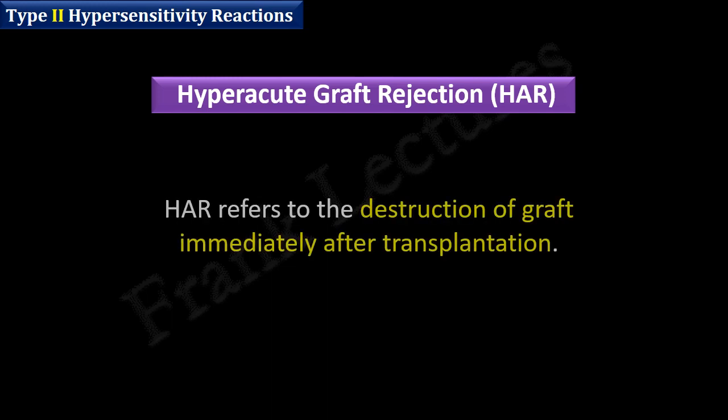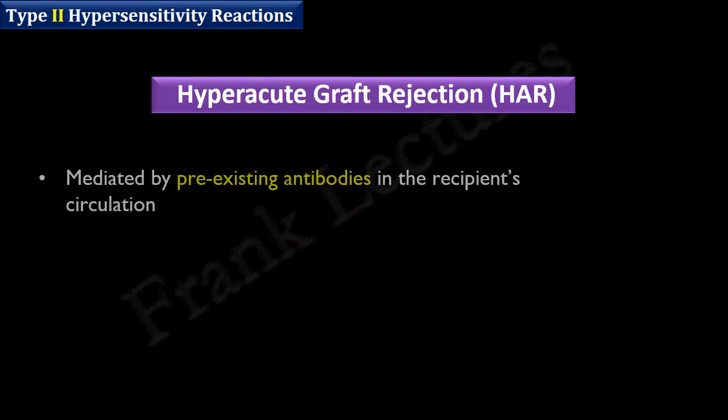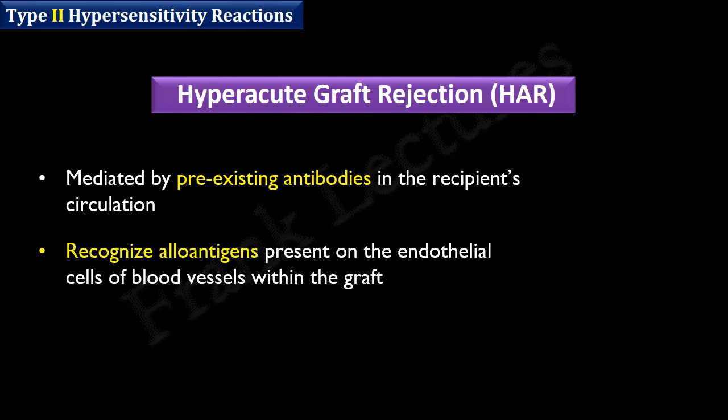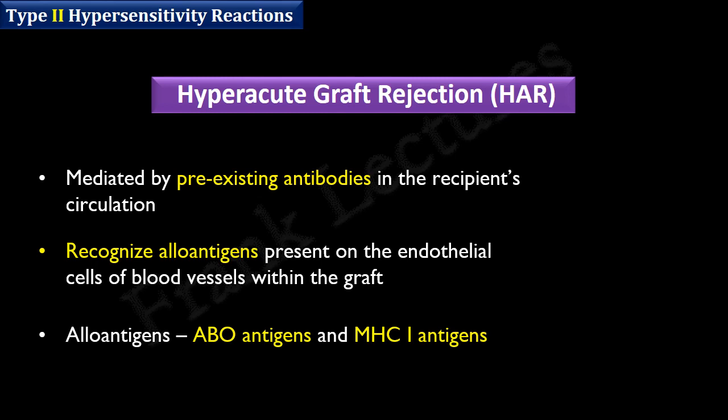Let's now discuss how type 2 hypersensitivity reactions result in hyperacute graft rejection. Hyperacute graft rejection refers to the destruction of a graft immediately after transplantation, occurring due to the presence of pre-existing antibodies in the recipient's circulation. These antibodies recognize allo-antigens present on the endothelial cells of blood vessels within the transplanted organ. The most important allo-antigens in hyperacute graft rejection are ABO antigens and MHC class I molecules.